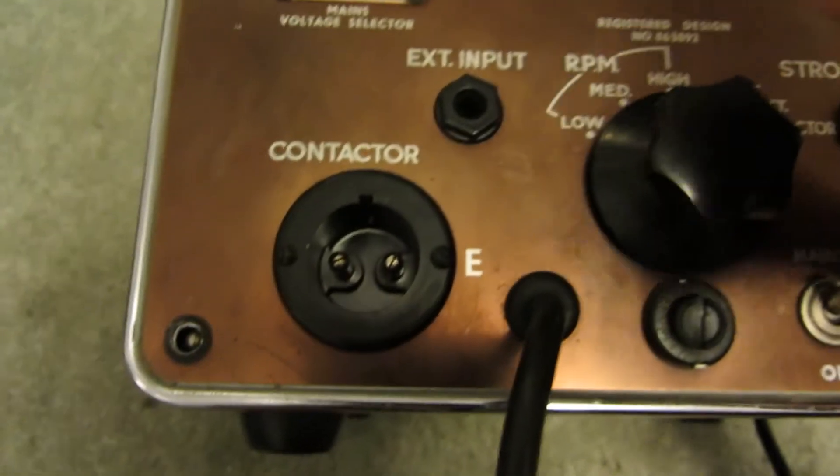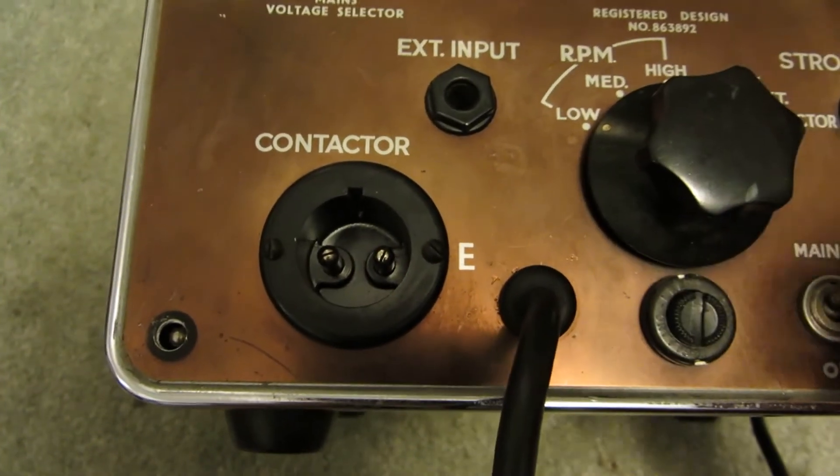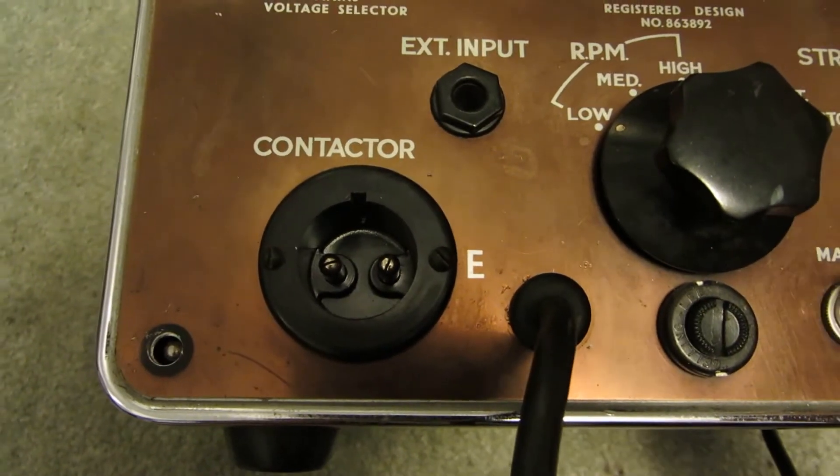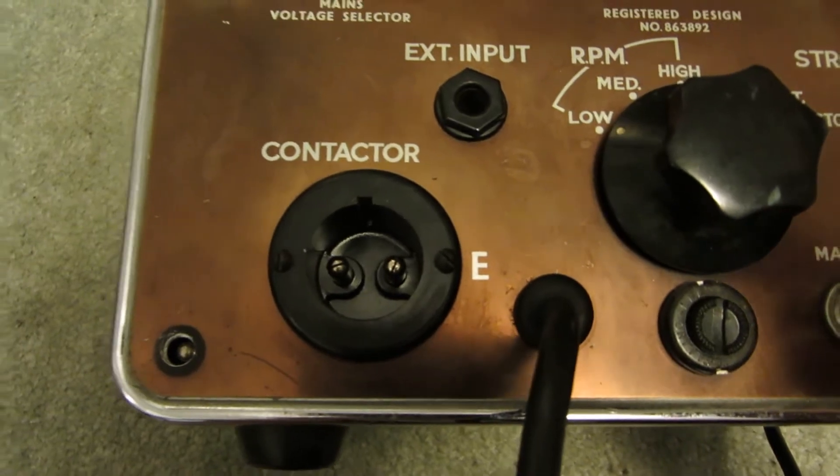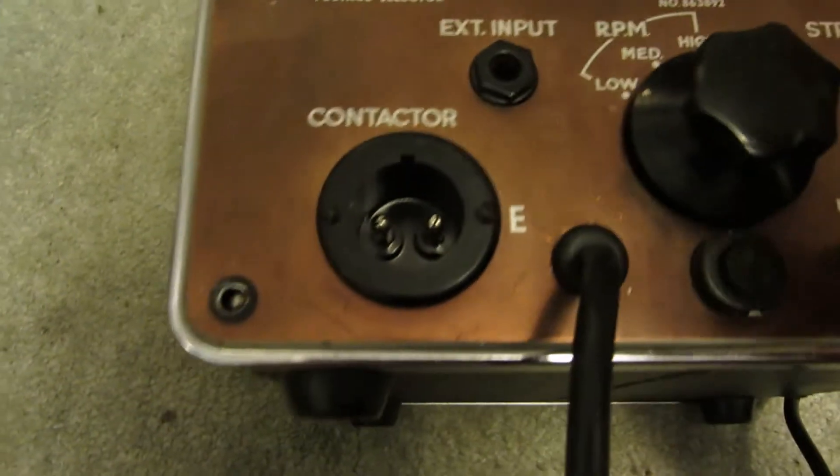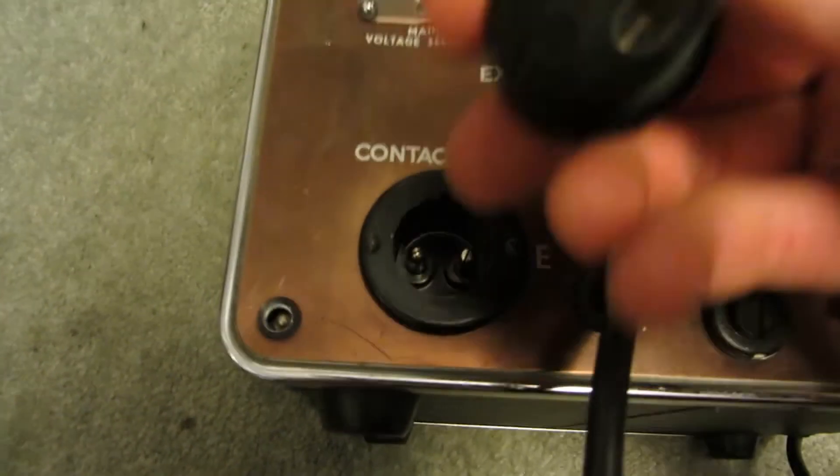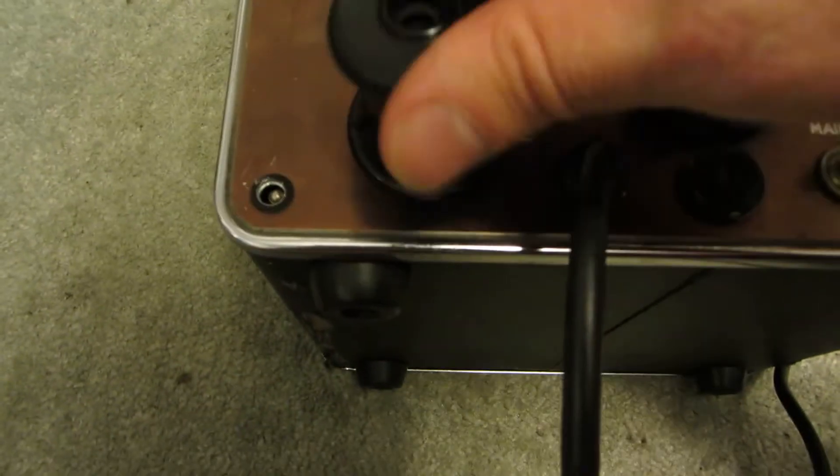Which is what this here is. I don't have anything else for this, but I assume some kind of contactor would plug into there to maybe control something external, like maybe a motor or another type of light. There's a slot there for it.